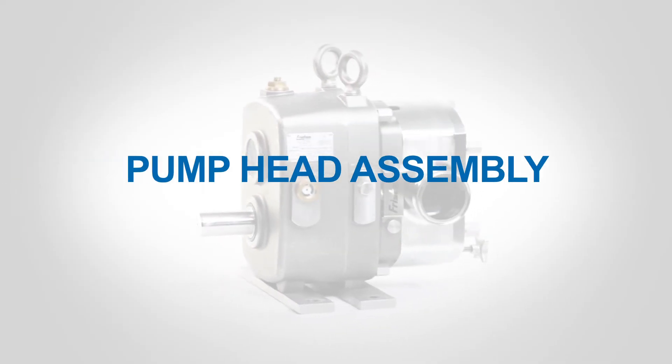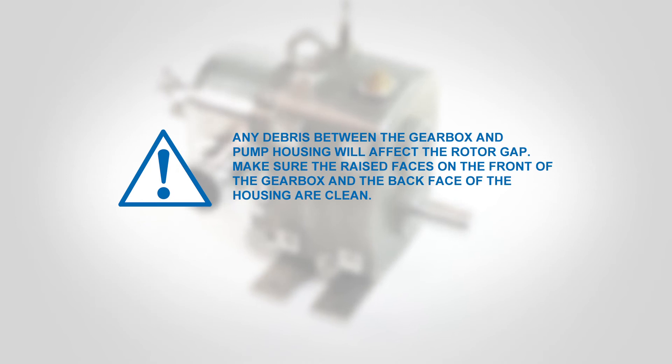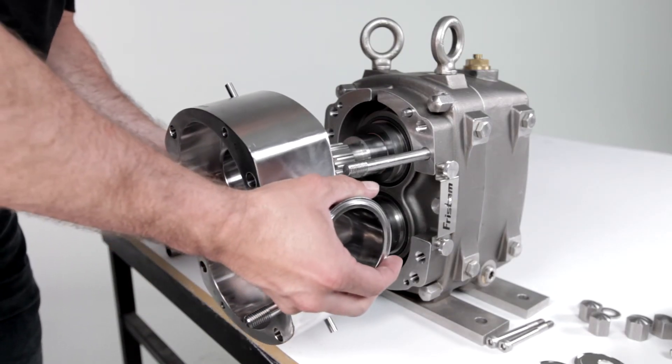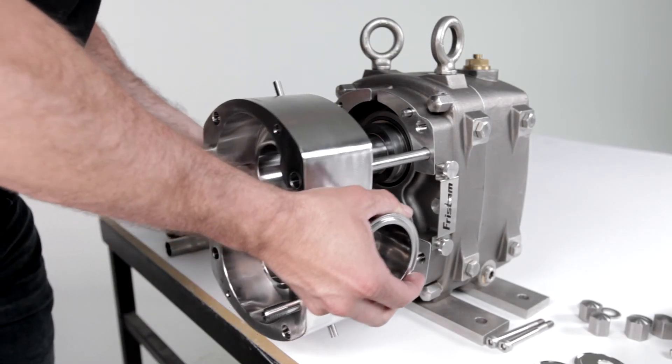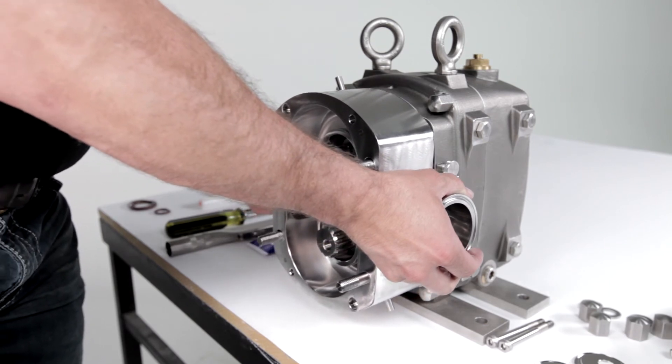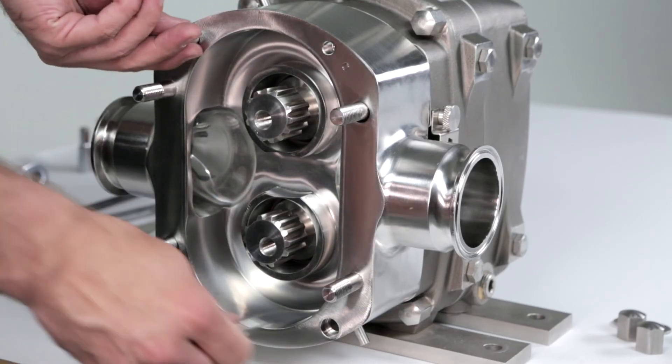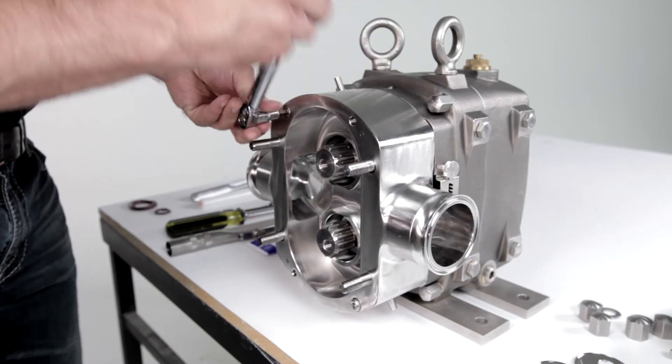Pump Head Assembly. Note any debris between the gearbox and pump housing will affect the rotor gap. Make sure the raised faces on the front of the gearbox and the back face of the housing are clean. Carefully slide the housing onto the studs and over the shafts with the serial number on top. Use a torque wrench to tighten the housing screws.